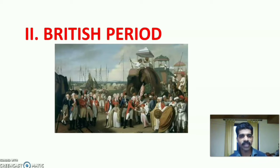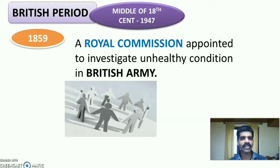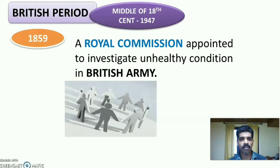The British period is generally considered to span from the middle of the 18th century to 1947. During 1859, a royal commission was appointed by the British government to investigate the unhealthy conditions among the British army.